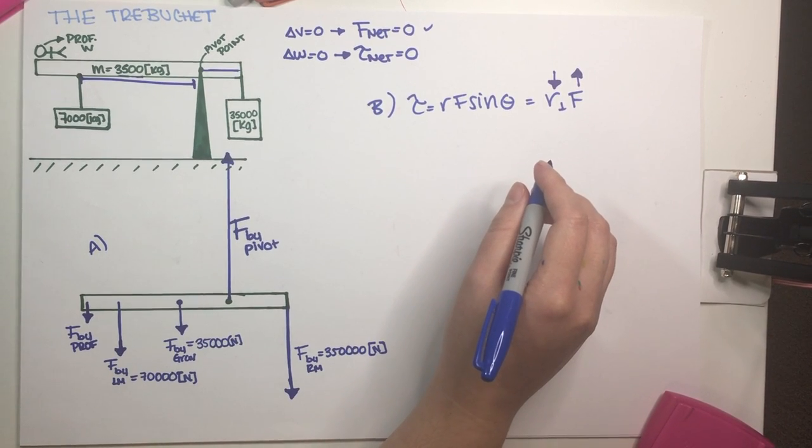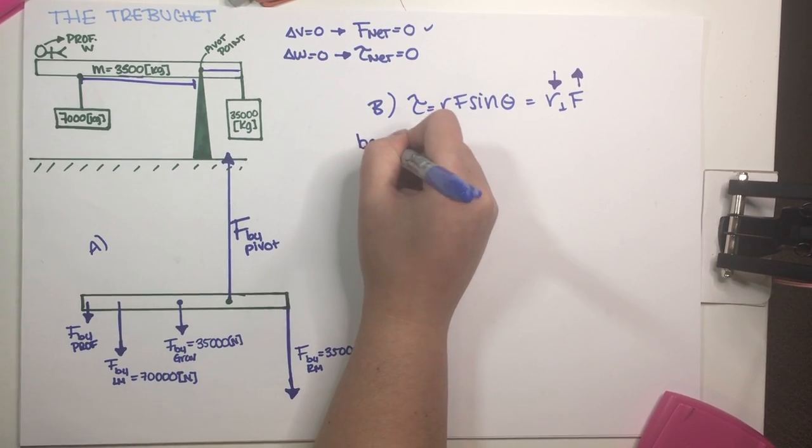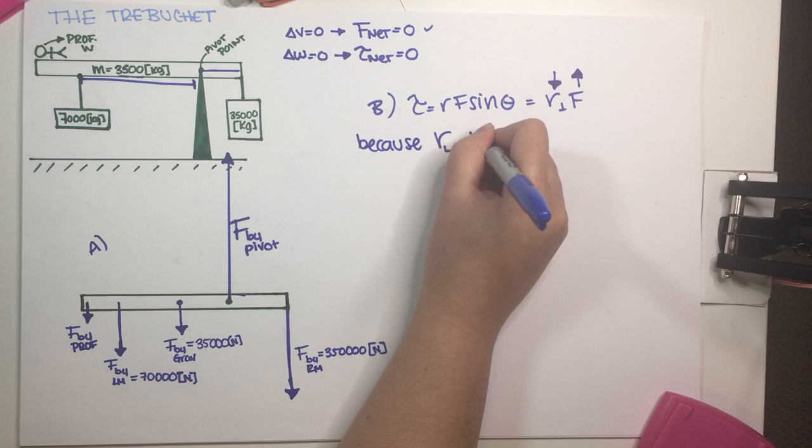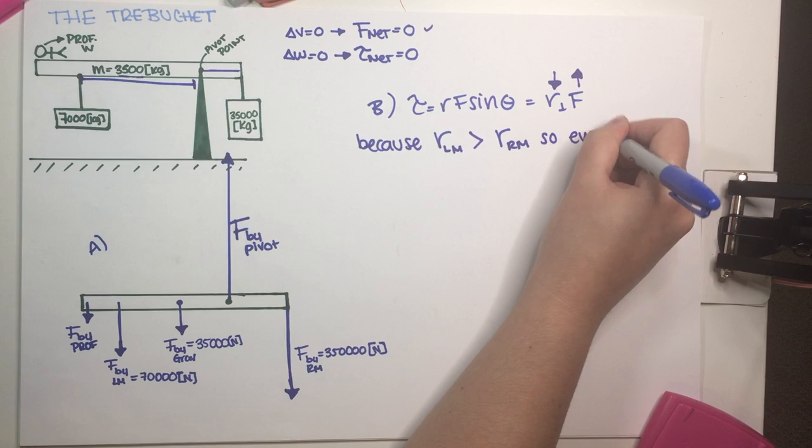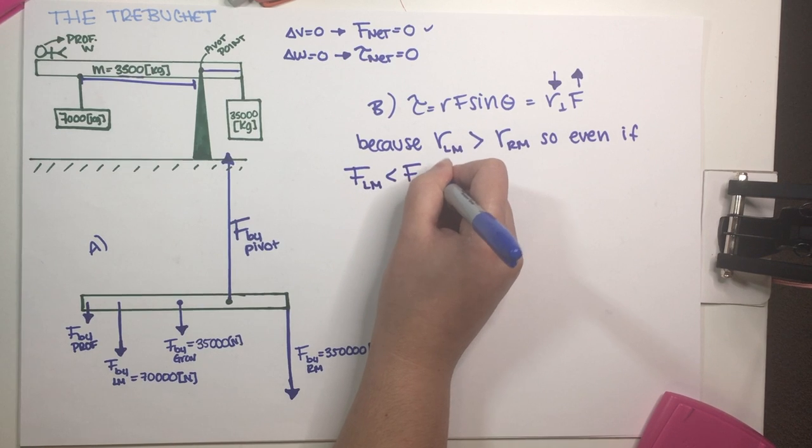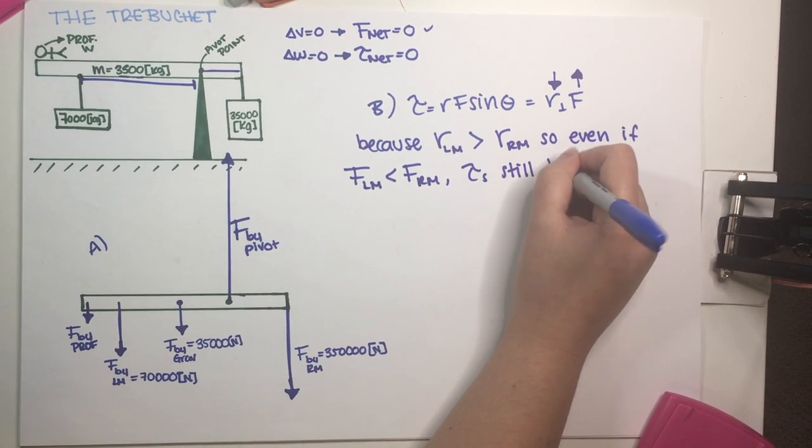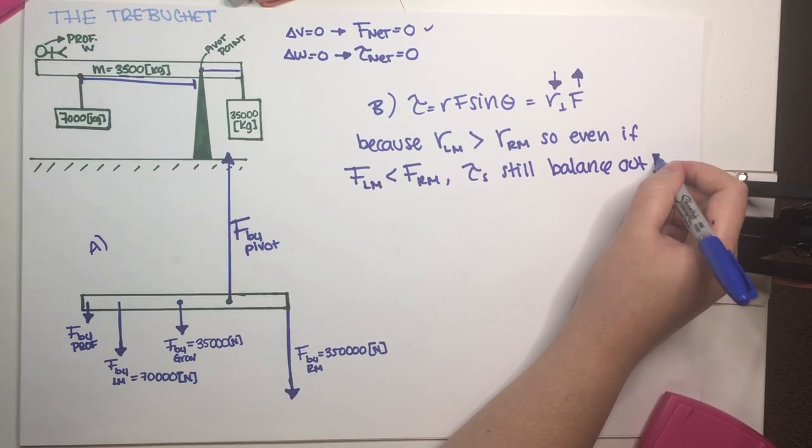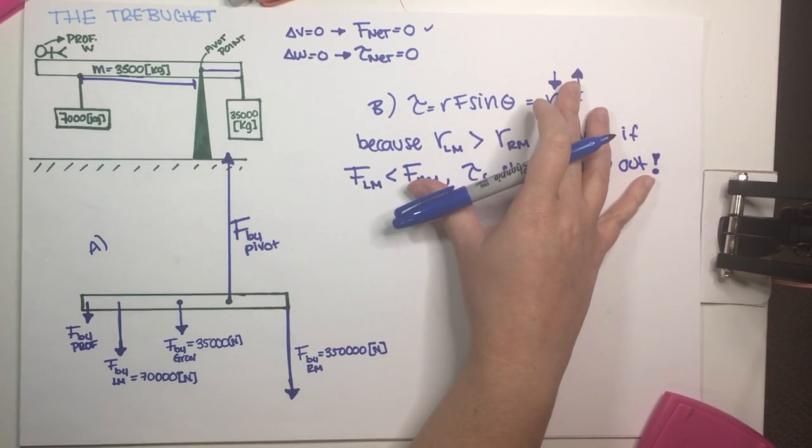So I guess final answer for B is briefly explain how the hanging mass, because R to the left mass is greater than R to the right mass. So even if force left mass is smaller than force to the right mass, torques still balance out. So remember, a torque is a balancing act. We're not just looking at the forces. We also have this R involved. So that was basically it.